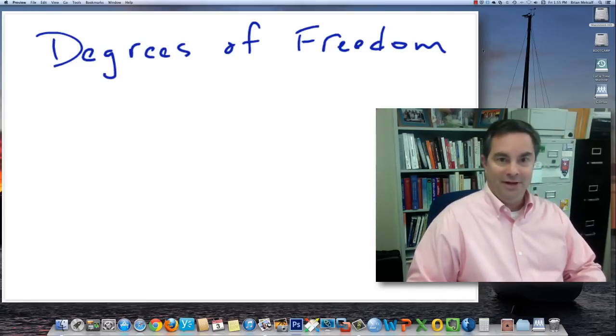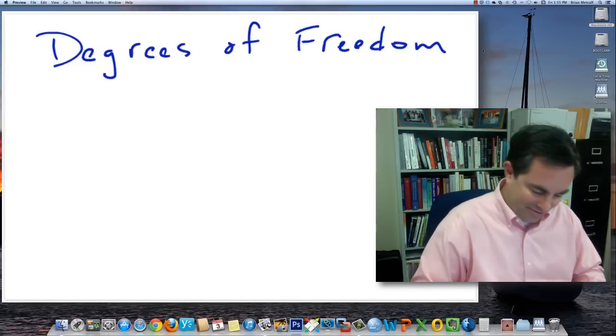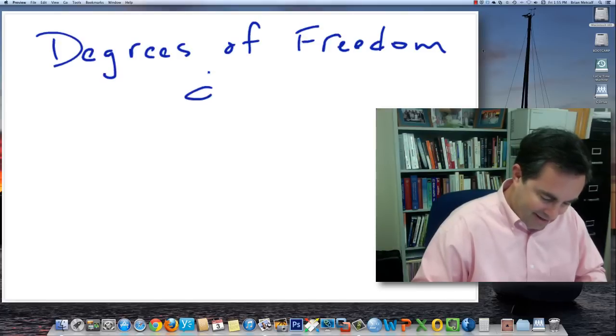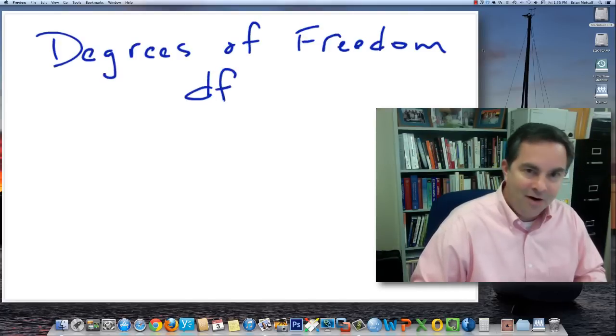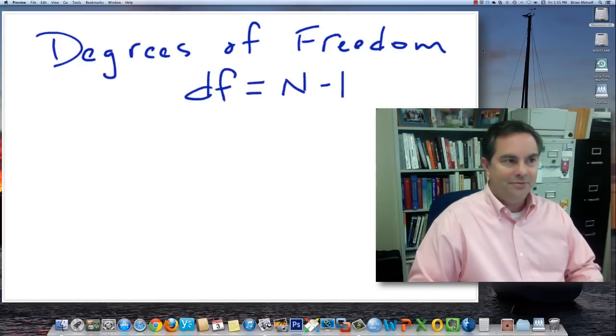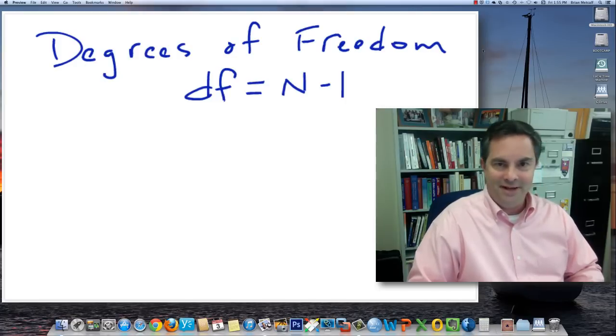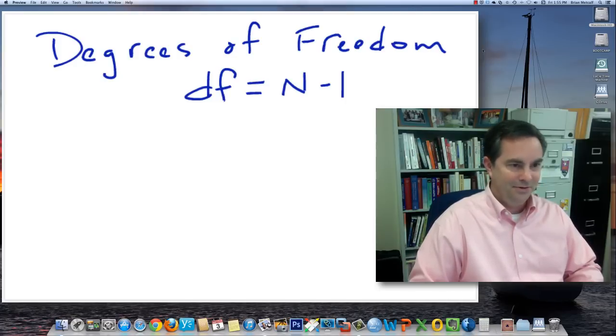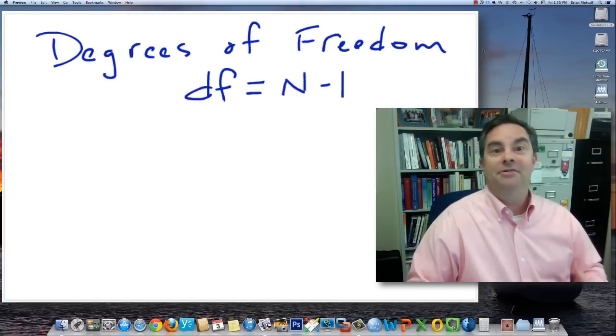And first I'll tell you minimally what you need to know. If you remember nothing else about degrees of freedom for now, it is often symbolized DF, is equal to the number of participants, or the number of items you have in a data set, the number of numbers you have in a pile of numbers, minus 1.